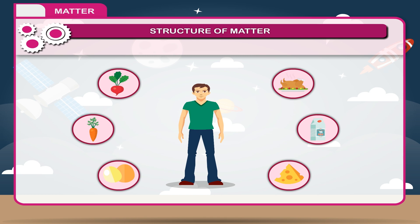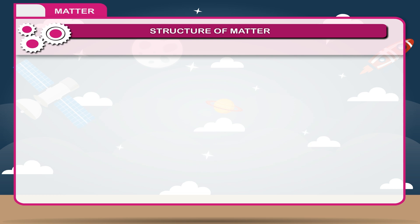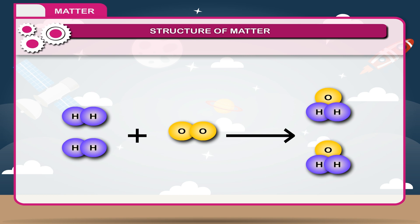All the different things that we see around are formed with these elements. The smallest unit of element which may or may not have an independent existence but always take part in chemical reaction is known as atom.